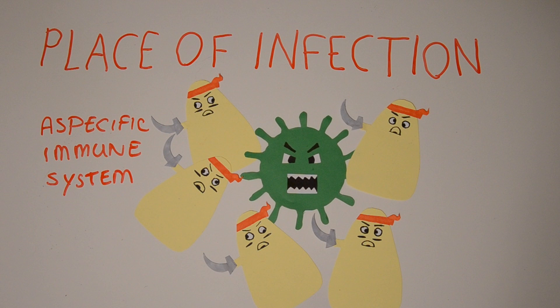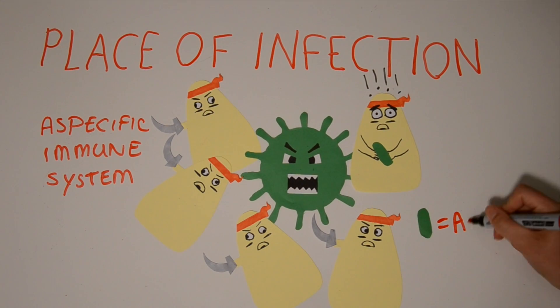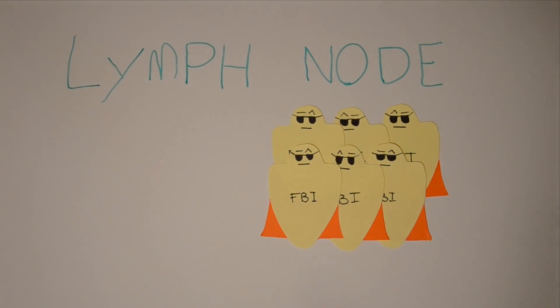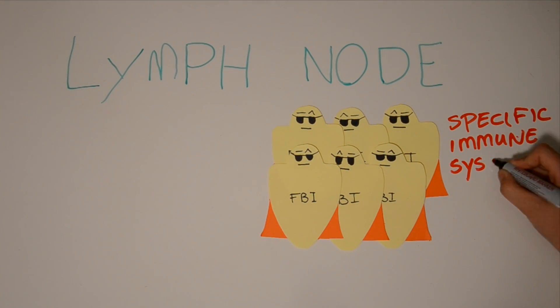To do this, the reporter cell will take a piece from the pathogen, called the antigen, which is unique for each kind of pathogen. The reporter with the antigen goes to the lymph nodes, where the cells of the specific immune system are waiting.